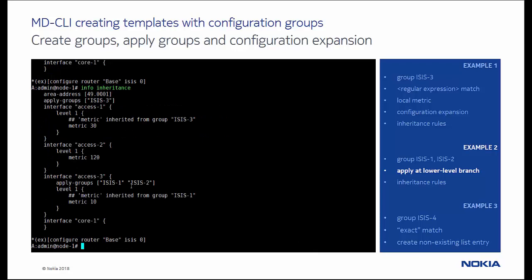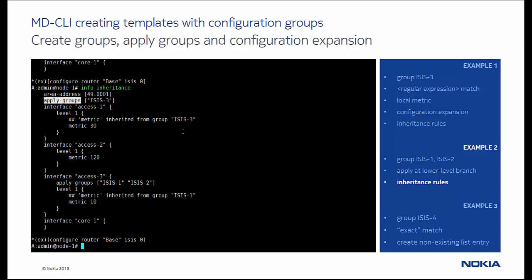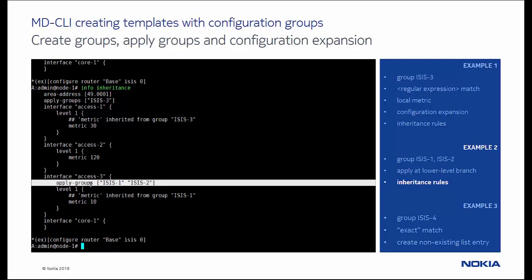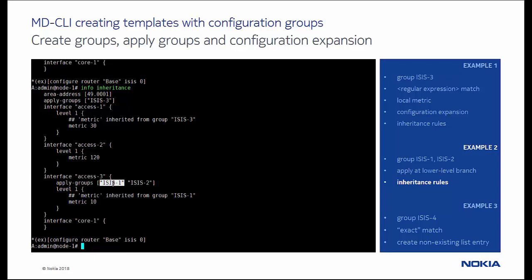We see that interface access 3 inherited metric 10 from isis1, since configuration statements in groups applied at a lower level branch have precedence over configuration statements in groups applied at a higher level branch. Also, the precedence of statements in configuration groups applied at the same branch level is determined by the configuration order, meaning that statements in the first applied configuration group have higher precedence.